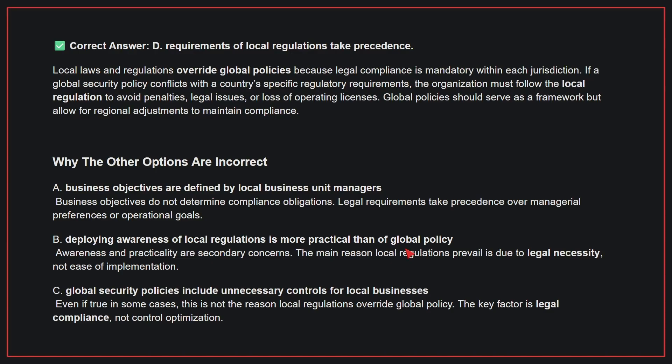Why are the other options incorrect? A: Business objectives are defined by local business unit managers. Business objectives do not determine compliance obligations; legal requirements take precedence over managerial preferences or operational goals. B: Deploying awareness of local regulations is more practical than global policy. Awareness and practicality are secondary concerns; the main reason local regulations prevail is due to legal necessity, not ease of implementation.